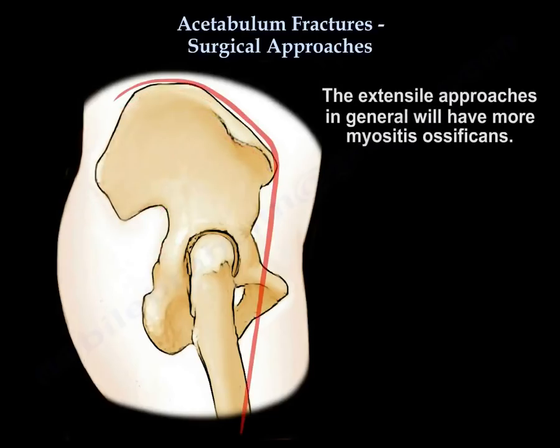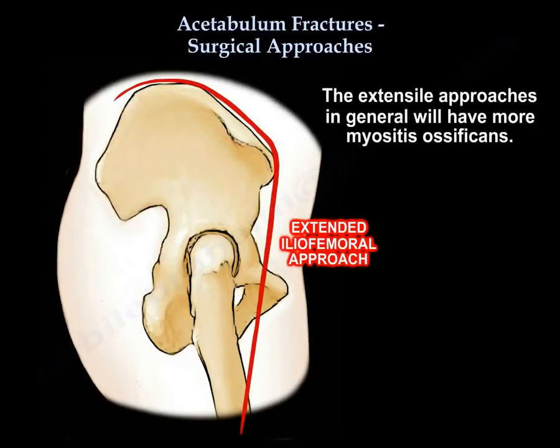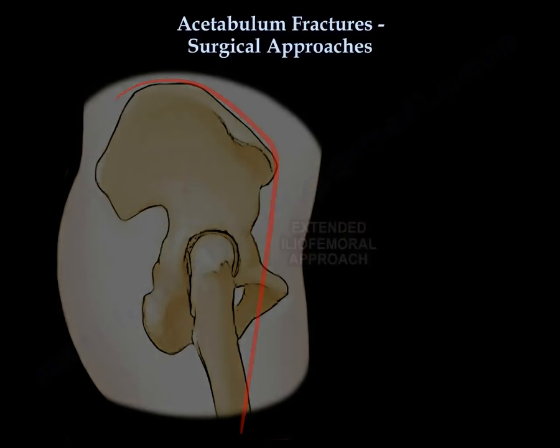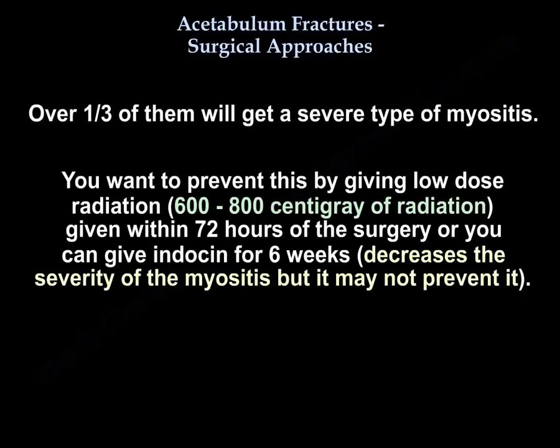The extensile approaches in general will have more myositis ossificans. Over one-third of them will get a severe type of myositis. You want to prevent that by low-dose radiation — 600 to 800 centigrade of radiation given within 72 hours of surgery — or you can give indomethacin for 6 weeks. That will decrease the severity of the myositis, but it may not prevent it.